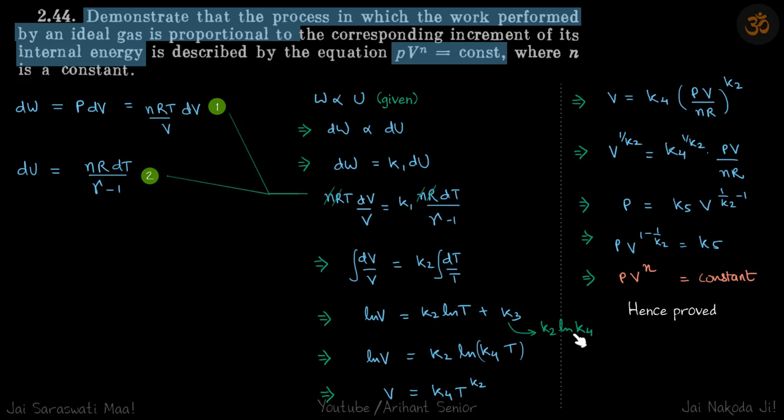This K2 is same as this, and K4 is some other constant. So we can write that K3 in this form. So this gives ln V equals K2 ln K4 T.